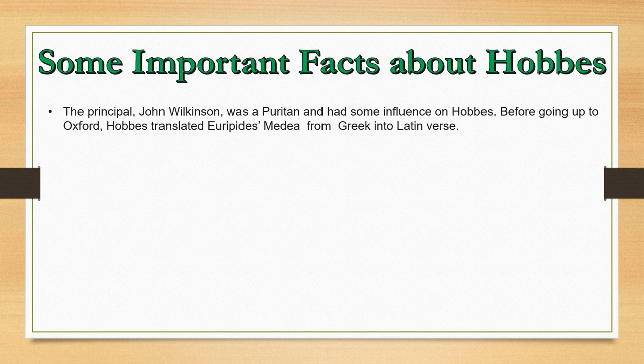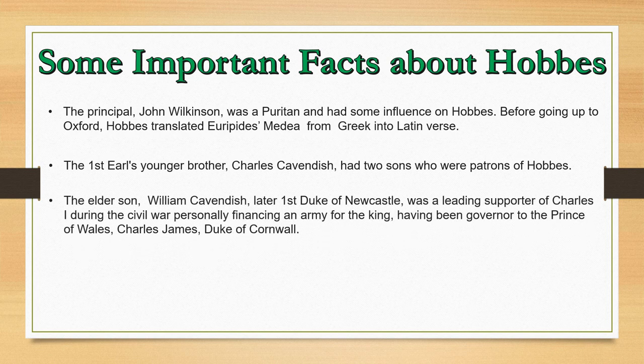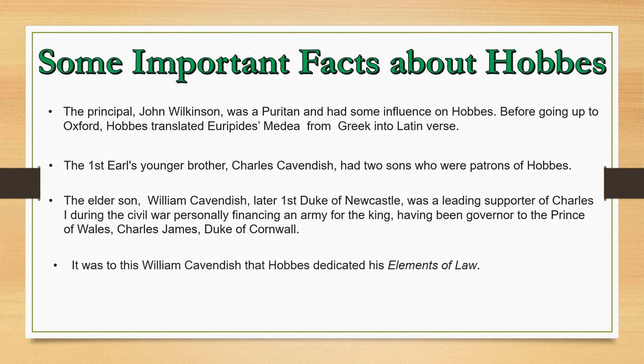Before going up to Oxford, Hobbes translated Euripides' Medea from Greek into Latin verse. The first Earl's younger brother Charles Cavendish had two sons who were patrons of Hobbes. The elder son, William Cavendish, later first Duke of Newcastle, was a leading supporter of Charles I during the Civil War, personally financing an army for the King, having been governor to the Prince of Wales, Charles James, Duke of Cornwall. It was to this William Cavendish that Hobbes dedicated the Elements of Law.